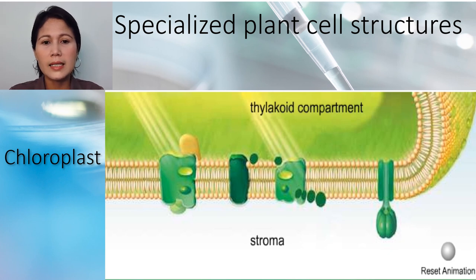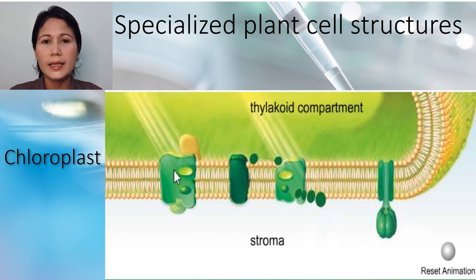This is a cutaway view of one disc in a granum. The thylakoid membrane separates the thylakoid compartment from the stroma. During the first part of photosynthesis, these elements work together to absorb sunlight energy and store it in the form of ATP.